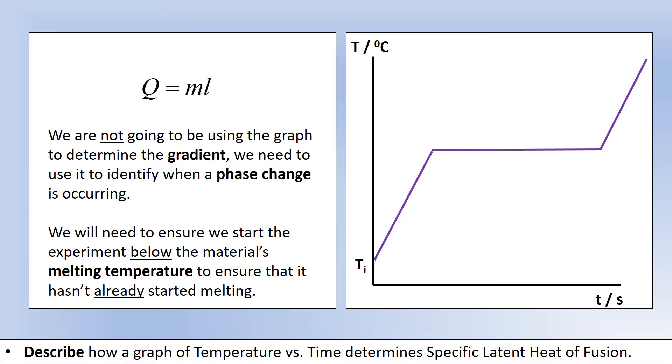Unlike most experiments we're not actually going to be using the gradient or the y-intercept of our graph, but we are going to be plotting a graph of temperature against time because we need to identify the section where the material is actually changing phase, not where it's changing temperature.